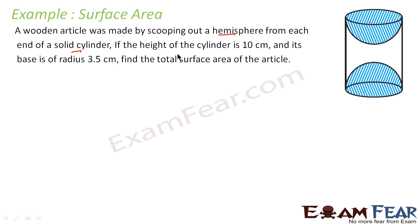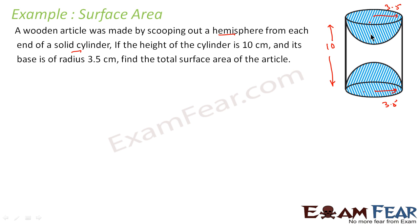If the height of the cylinder is 10 cm and the base radius is 3.5 cm, we have to find the total surface area of the article. It is a very simple question. We are having the cylinder, and from each end a hemisphere is hollowed out. Just subtract the two hemisphere base areas from the cylinder and we get the area.